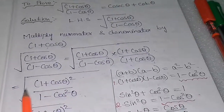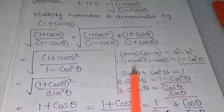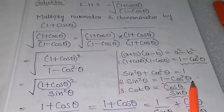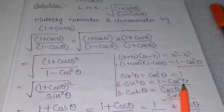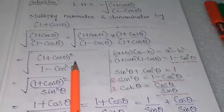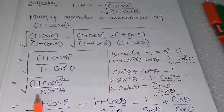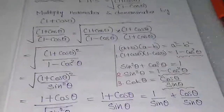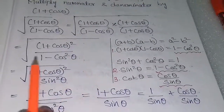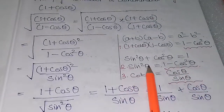Now we apply the square root. Using the trigonometric identity sin²θ + cos²θ = 1, we get sin²θ = 1 - cos²θ. So 1 - cos²θ in the denominator is equal to sin²θ. The numerator remains (1 + cosθ)² as it is, divided by sin²θ.